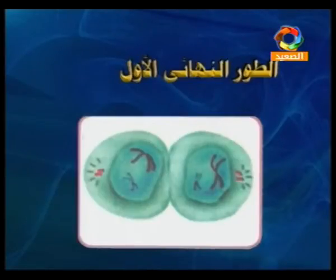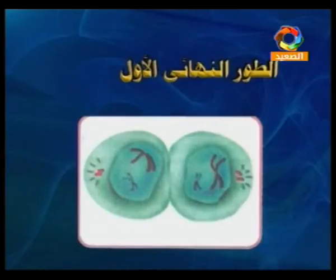أما الطور النهائي الأول، فيحصل فيه تغيرات عكسية للطور التمهيدي، فيتكون غشاء نووي حول الكرومصوميات في كل قطب. فينتج عندنا خليتان، كل واحدة تحتوي على نصف عدد كرومصوميات الخلية الأم. ثم تدخل الخلية في مرحلة الانقسام الميوزي الثاني، الذي يشبه إلى حد كبير الانقسام الميتوزي.